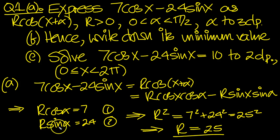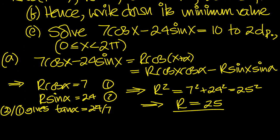Square rooting gives r equals 25. So now we need to get α, so divide 2 by 1 and we'll get tan. Sine over cosine is tan(α). So α equals tan inverse of 24 over 7.